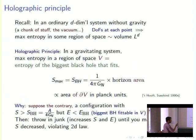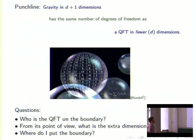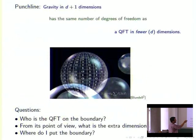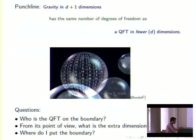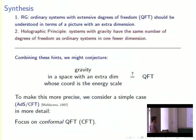This is basically the only thing we know about quantum gravity: the accounting of degrees of freedom is different from an ordinary system — in particular it has the same number of degrees of freedom as a quantum field theory in one fewer dimension. This raises obvious questions: given a theory of gravity, what description should we use? From the point of view of that field theory on the boundary, what is the extra dimension? And where do we put the boundary?